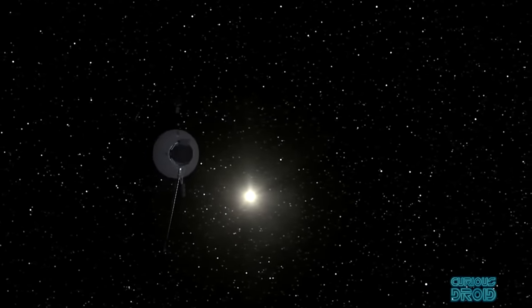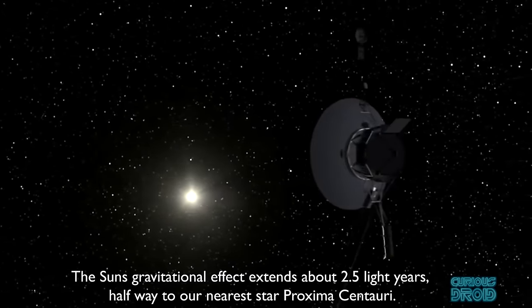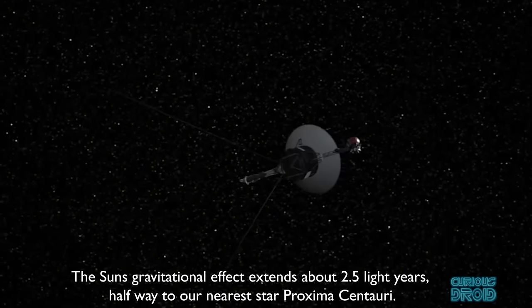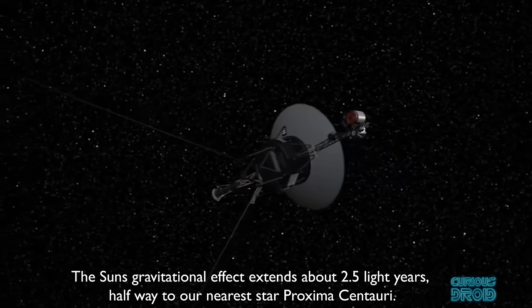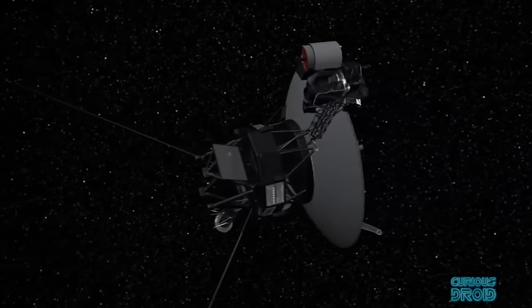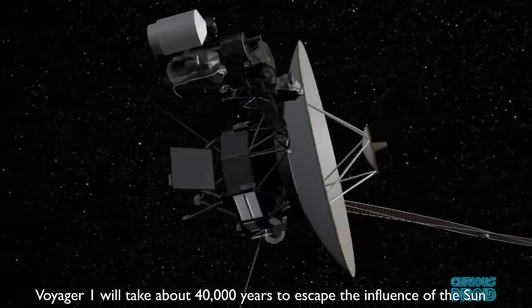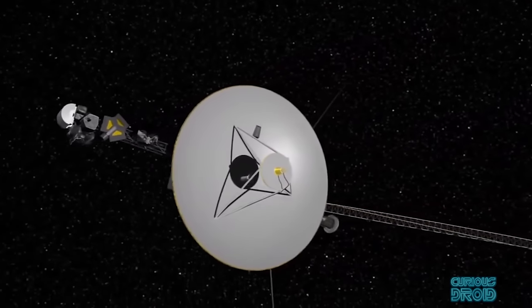But the Sun's gravity will still pull on the craft and slow it down. In fact, the Sun's gravitational effect extends out about two and a half light years, and it will take Voyager, traveling at over 60,000 kilometers per hour, 40,000 years to reach the point where the Sun's gravity no longer dominates.